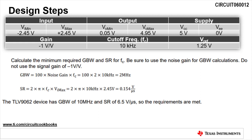The minimum slew rate for this circuit is calculated to be 0.154 volts per microsecond. The TLV9062 has 10 megahertz of bandwidth and a slew rate of 6.5 volts per microsecond, which easily meets the requirements for this design.